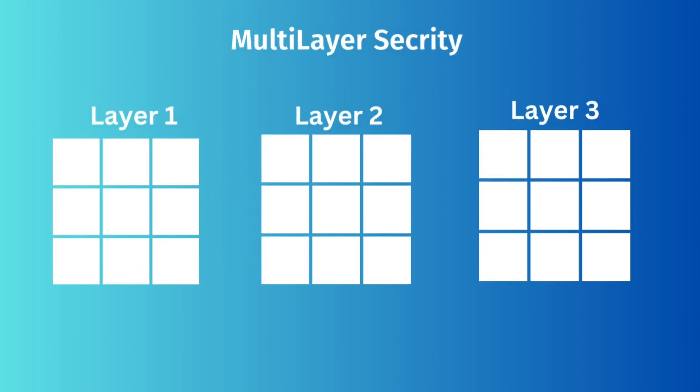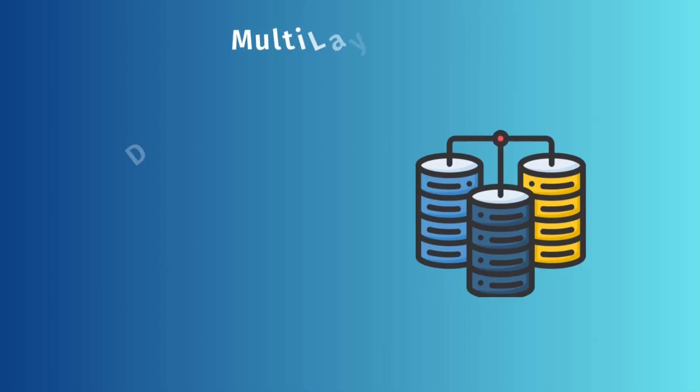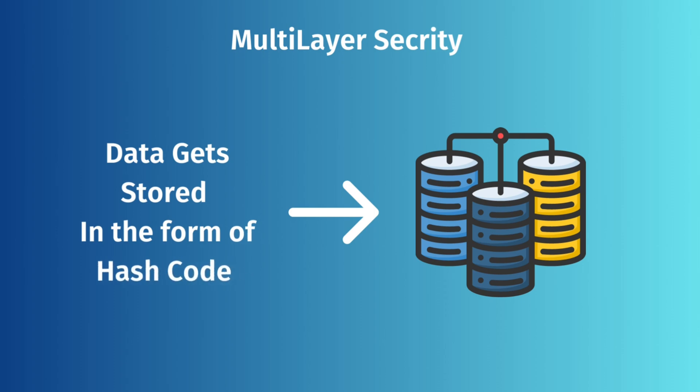It works on three different layers — Layer 1, Layer 2, and Layer 3. Users have to select different images, and the password which gets stored is stored in the form of a hash code.